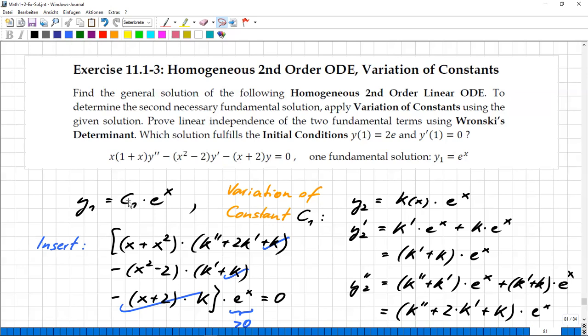So this is a so-called, well, it sounds a little bit contradictory, a variation of constant. Well, this is a varied constant. So it has been a constant, but now it's allowed to be dependent on x. And if it is, it's possible to take this approach and then just take the first derivative, the second derivative, using the product rule, you see.